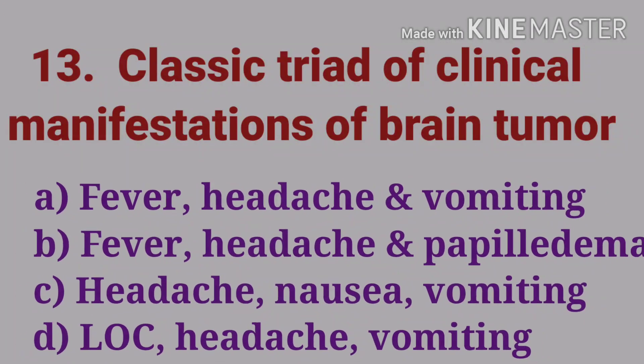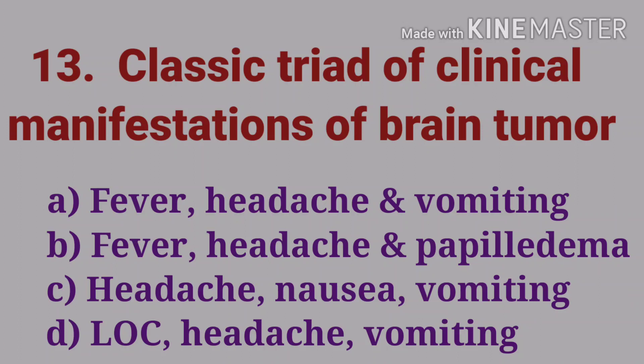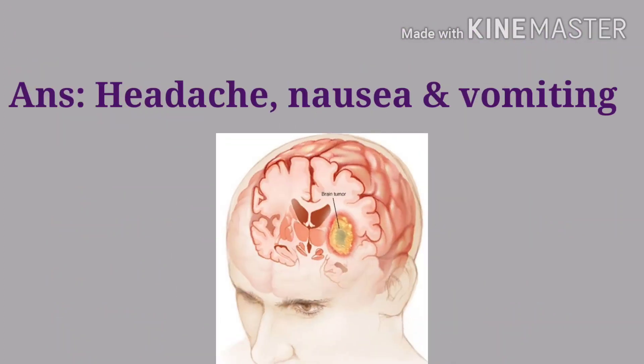The thirteenth question: the classical triad of clinical manifestations of brain tumor — options are fever, headache and vomiting; fever, headache and papilledema; headache, nausea and vomiting; or loss of consciousness, headache and vomiting. The answer is headache, nausea, and vomiting. These are the classical triad of brain tumor.